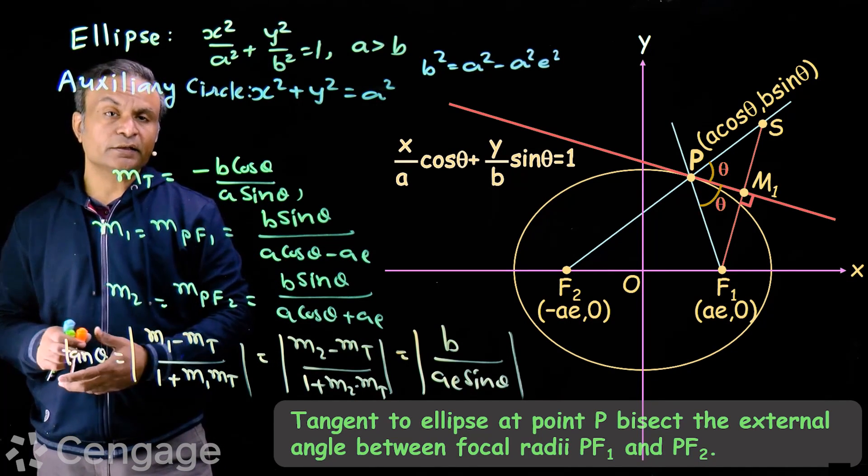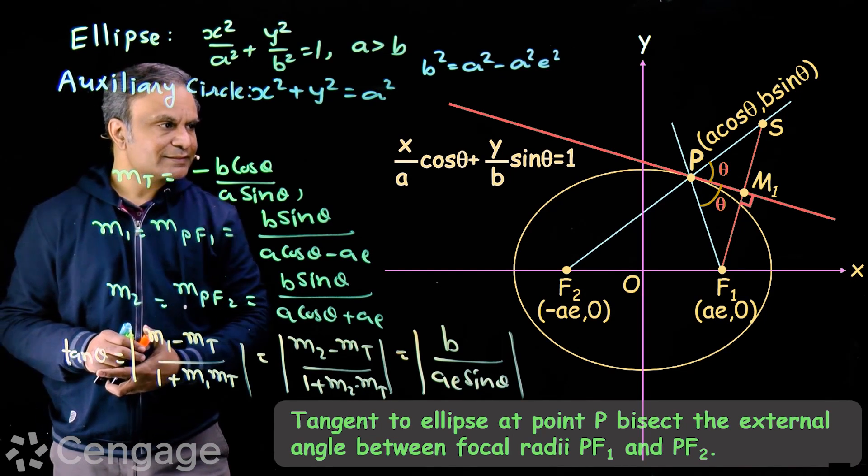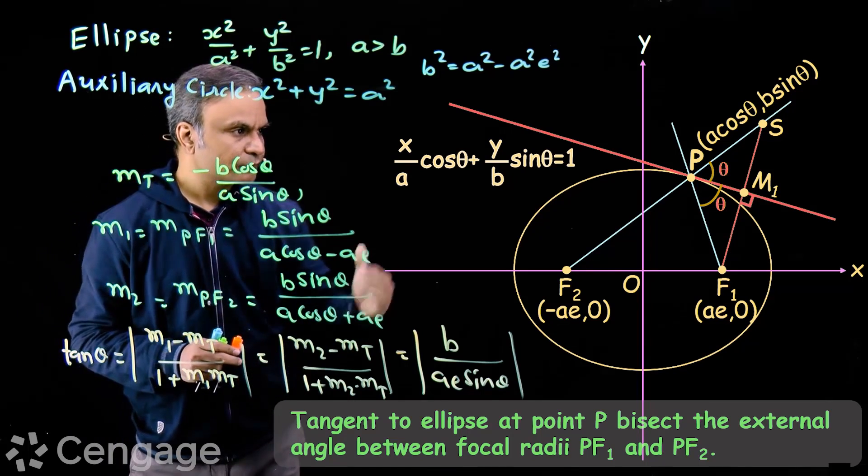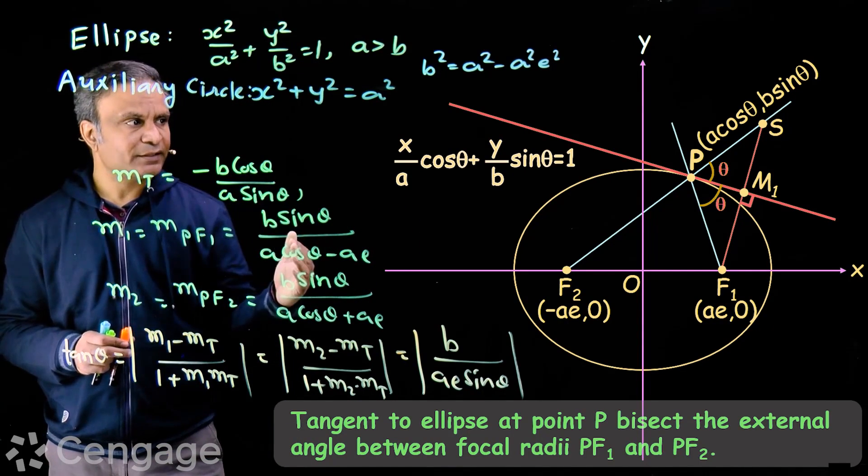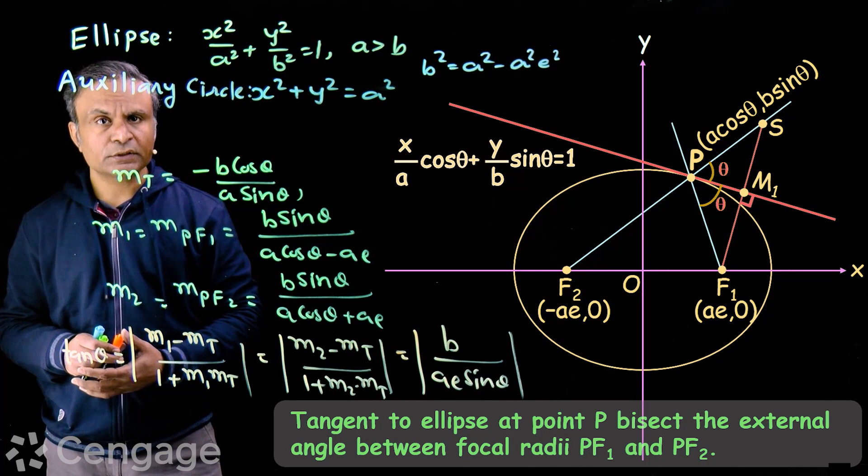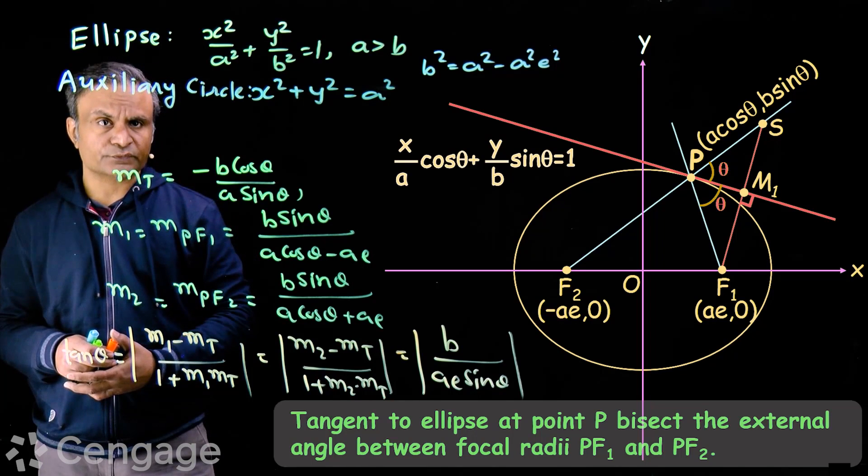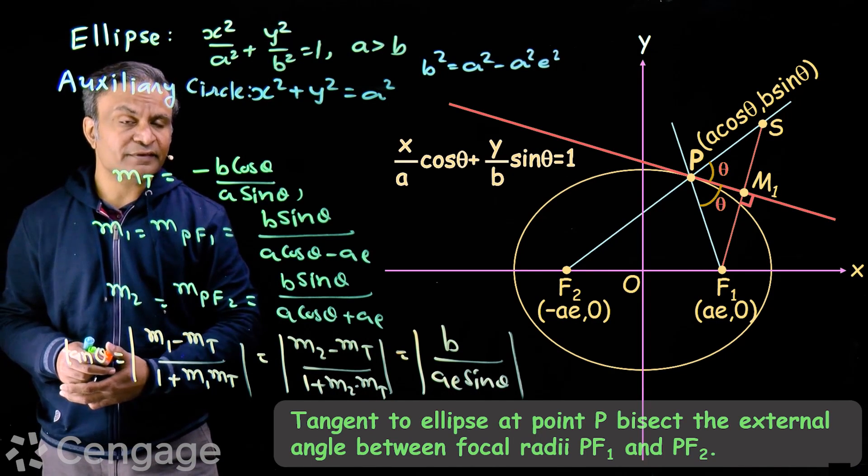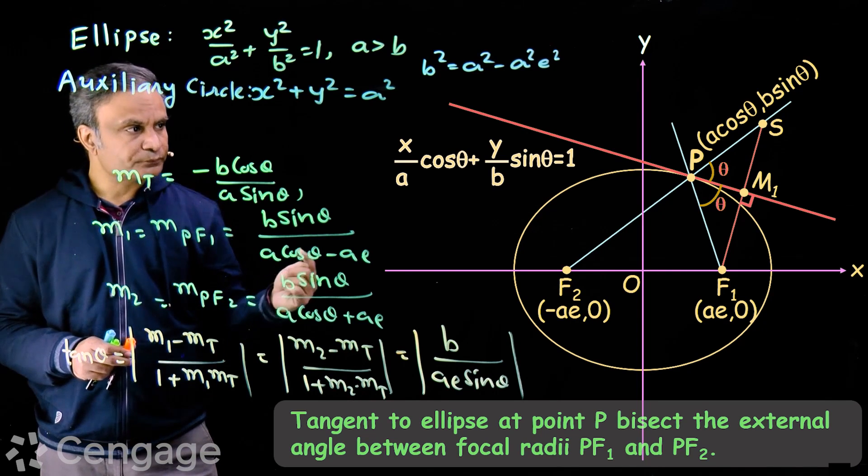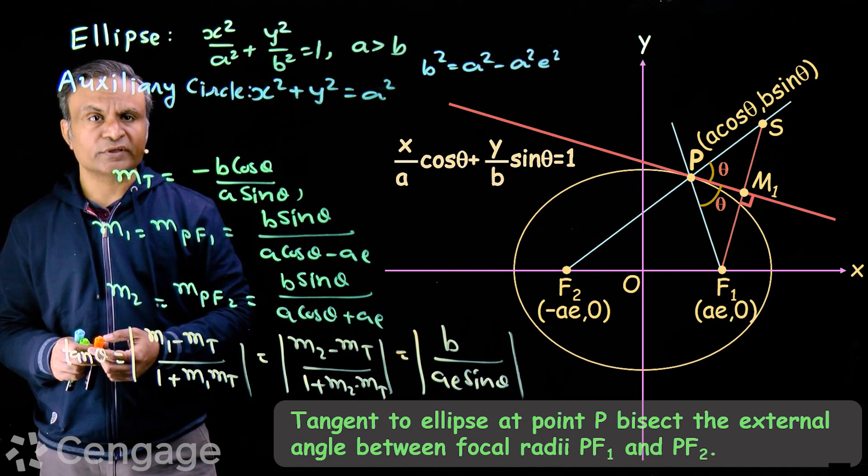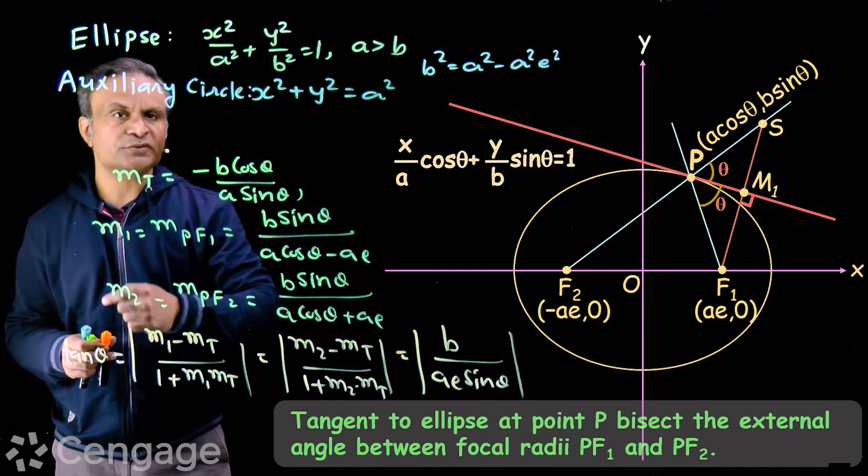From this we can define reflection property of ellipse. If incident ray is sent along line PF1, then after striking the surface of ellipse, reflected ray passes through the another focus. Reflected ray travels along line PF2. If incident ray is along PF1, then after striking ellipse, the ray will pass from F2.